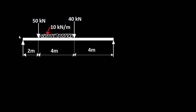Let's call this point A and this point B. This will be your reaction at A and this is your reaction at B. So you have 50 kN acting at 2m from A, 40 kN acting at 6m from A, and 10 kN per meter uniformly distributed load starting at 2m from A and extending through 4m, so the end of the UDL is 4m away from point B.